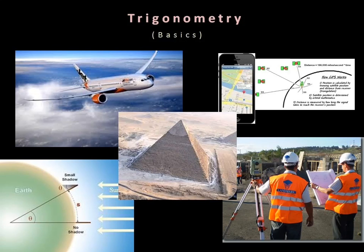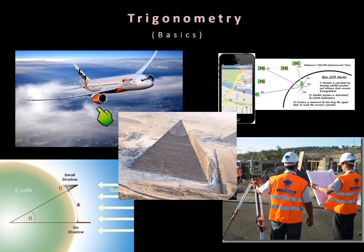Trigonometry is actually something that you encounter all the time, whether you know it or not. Anytime a plane flies, they actually use trigonometry to figure out which direction to point the plane. For example, if the wind is blowing this way, it actually blows the plane off course, so they have to compensate for that, and they do that by using trigonometry.